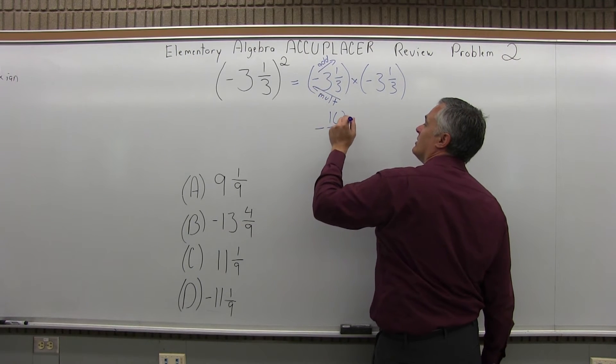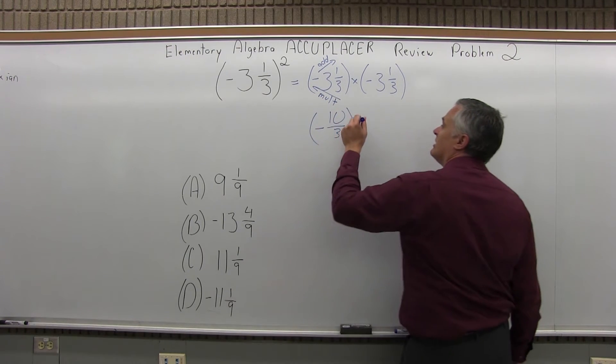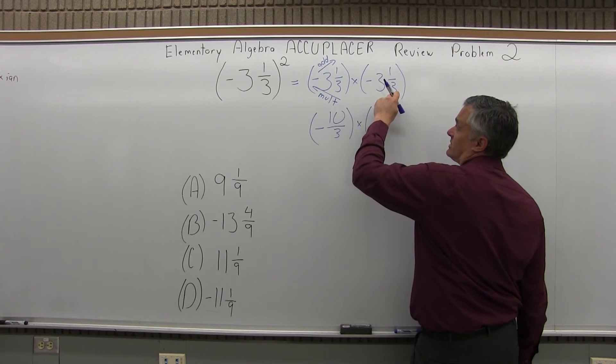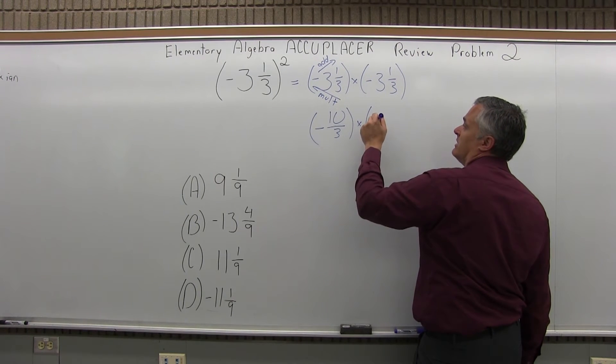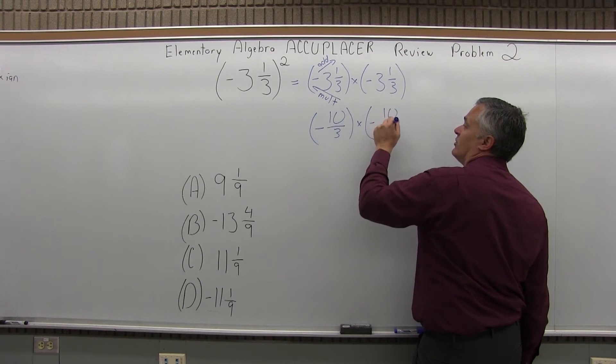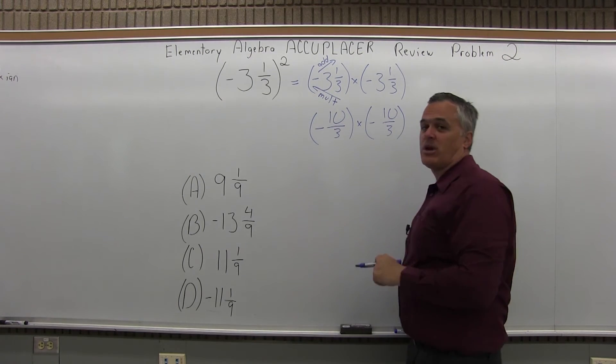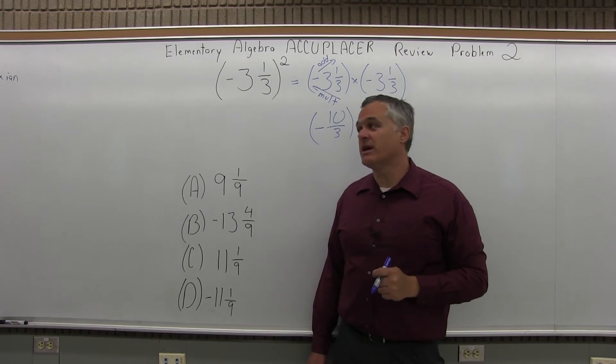So, it'll be negative 10 thirds times. We'll get the same result here because it's the same number. It's going to be negative 10 thirds. And now, we can multiply top times top, bottom times bottom.